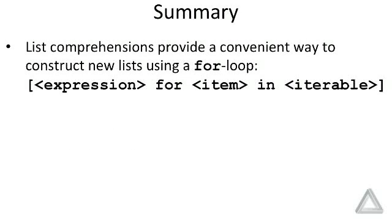Finally, we talked about list comprehensions, and they provide a convenient way to construct new lists using a for loop. The template for a list comprehension is shown here. We provide square brackets, and then the first thing we give is an expression. Then what looks like the header of a for loop: for <item> in <iterable>.